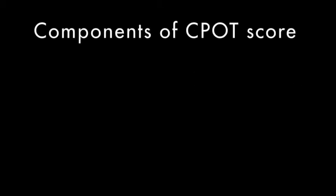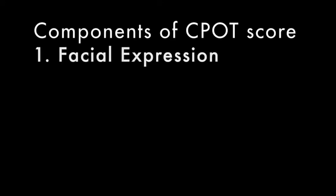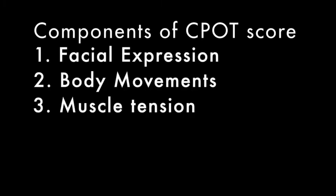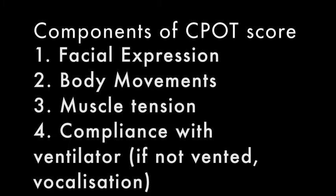CPOT is assessed by observing the patient in their surroundings for 1 minute and gently flexing their elbow. There are 4 components assessed to generate a CPOT score: the first is facial expression, the second body movements, the third muscle tension, and the fourth compliance with the ventilator. If a patient is not ventilated, the score is based on their vocalisation.